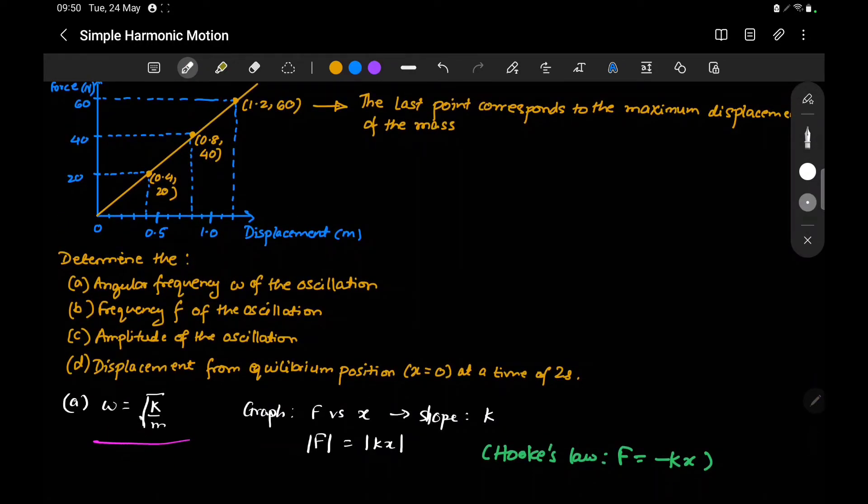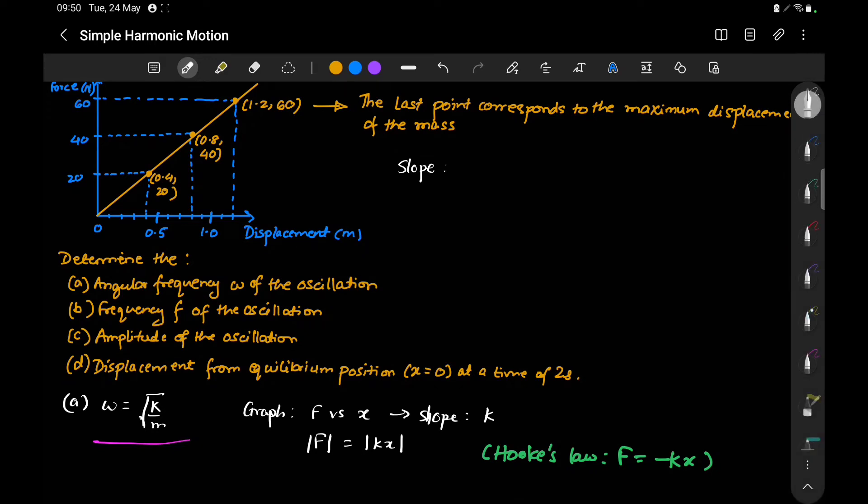Finding the slope from these points forming a straight line. Using the origin and another point: slope = 20 N / 0.4 m = 50 N/m.